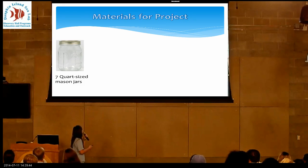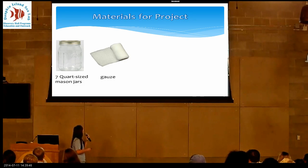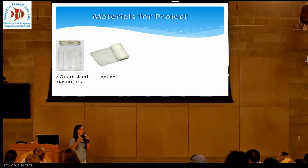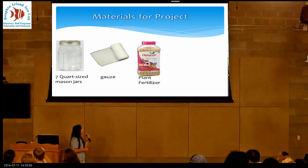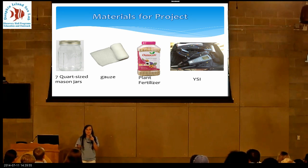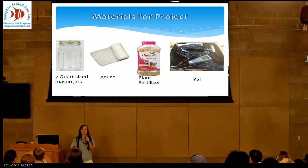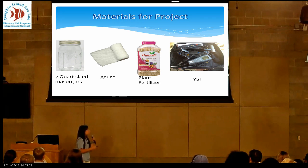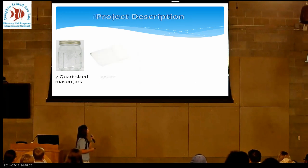The materials I used were seven quart-sized mason jars, gauze to cover the tops of the jars, rubber bands, regular plant fertilizer, and the YSI. The YSI measures things like pH, salinity, and dissolved oxygen — I only used it for dissolved oxygen.